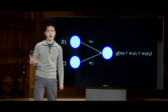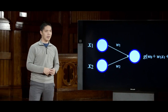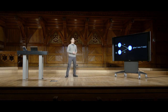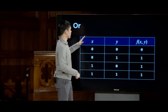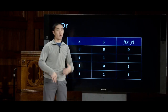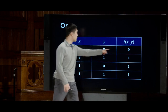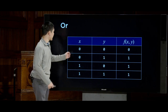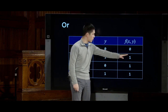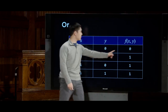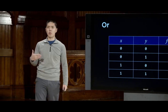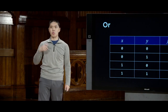A simple function we might calculate is the OR function, which takes two inputs x and y and outputs 1 if either input is 1, and outputs 0 only if both inputs are 0. To train a neural network to learn this function, we use a weight of 1 for each of the input weights, a bias of negative 1, and the step function as our activation function.